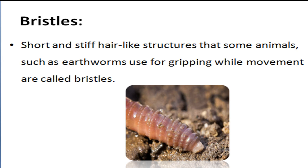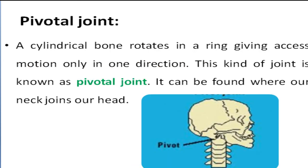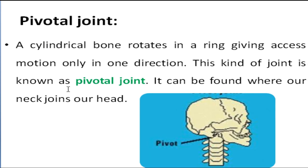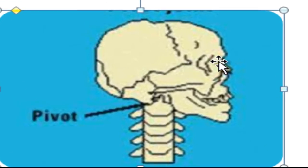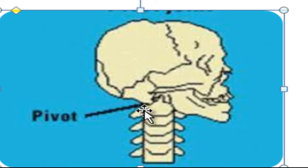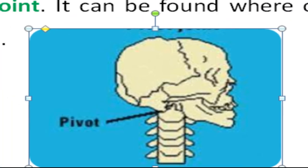Our next keyword is pivotal joint. A cylindrical bone rotates in a ring, giving access to motion in only one direction. This kind of joint is known as a pivotal joint. It can be found wherever the neck joins the head, as you can see in the figure.